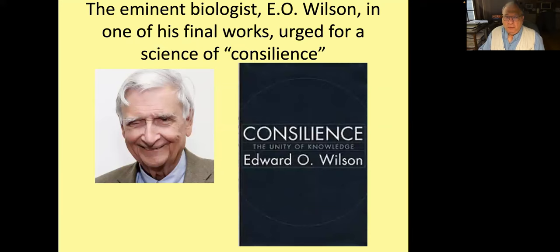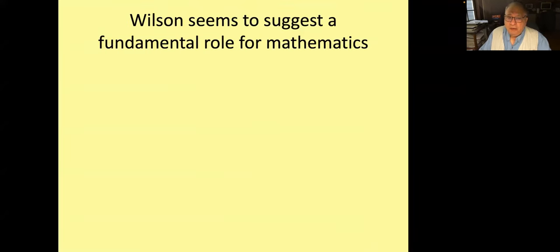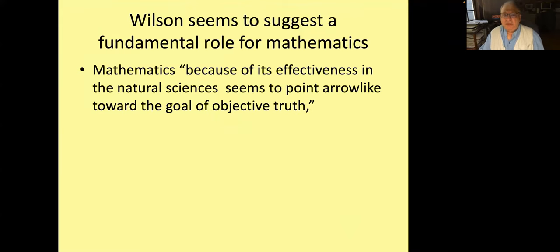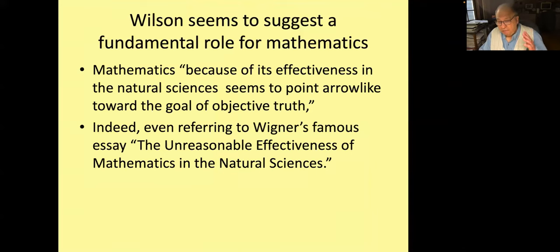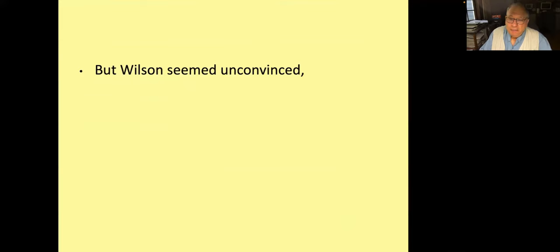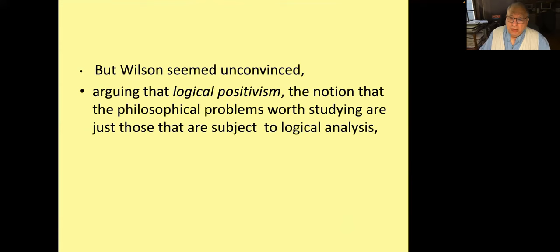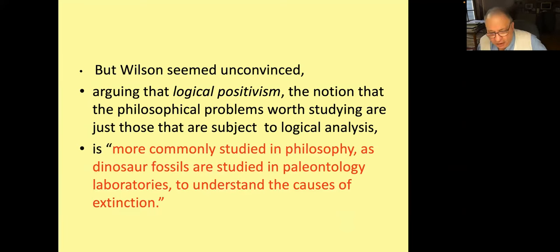And finally, another great biologist, Ed Wilson, in one of his final works, the book Consilience, urged for a science of consilience, bringing together different disciplines where similar problems were being confronted. He seemed to suggest a fundamental role for mathematics because he said math seems to point arrow-like towards the goal of objective truth. But he also referred to Wigner's famous paper, the unreasonable effectiveness of mathematics in the natural sciences. But he seemed unconvinced, calling it logical positivism, saying it's more commonly studied in philosophy like dinosaurs are studied in paleontology, so we can understand the causes of extinction.